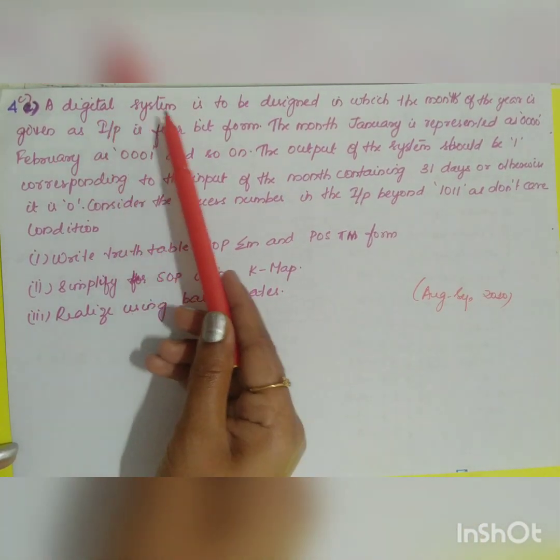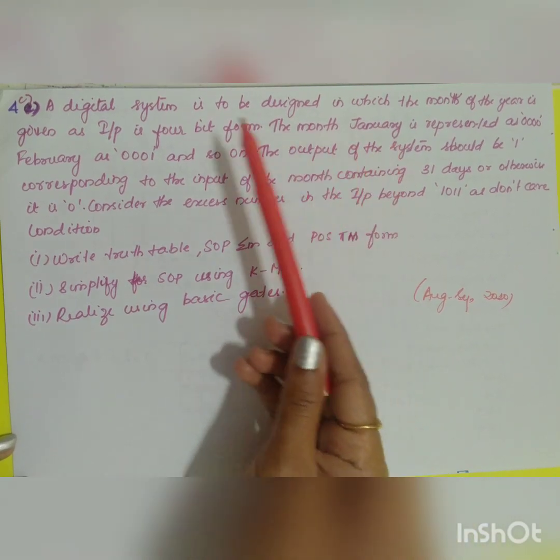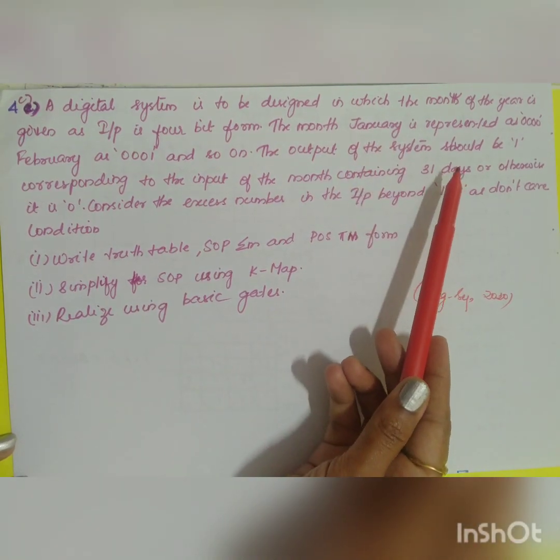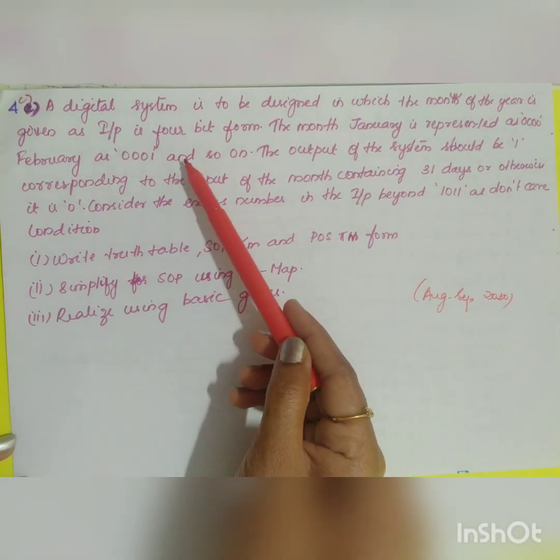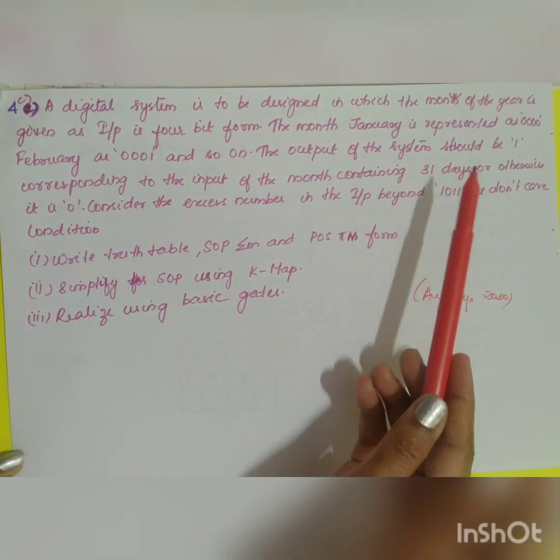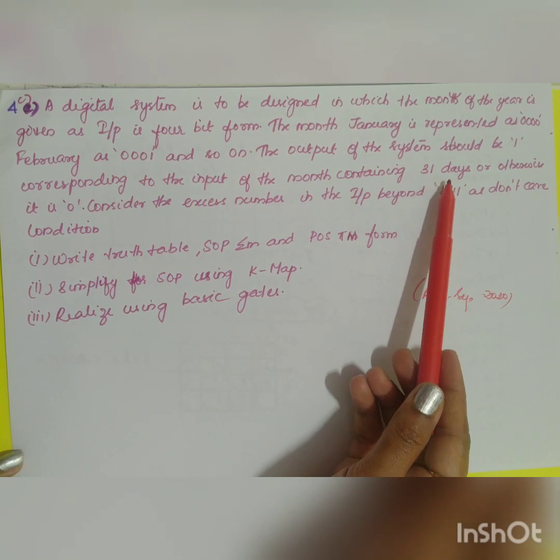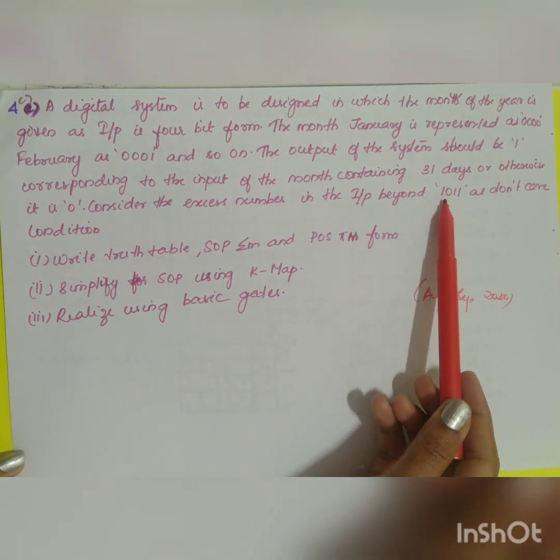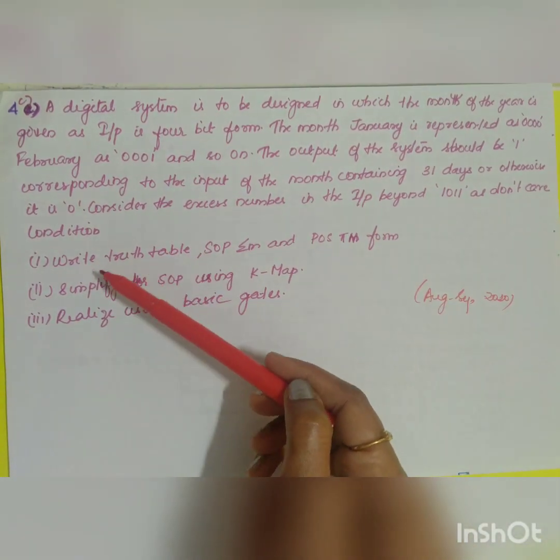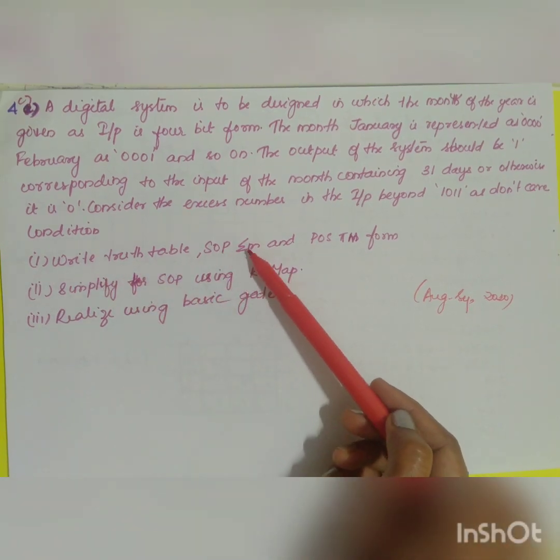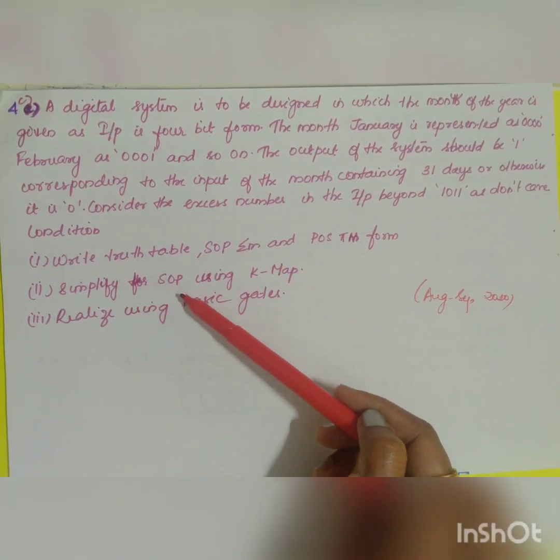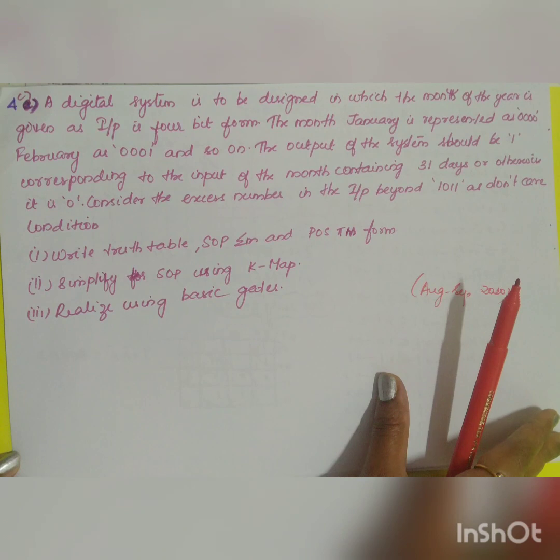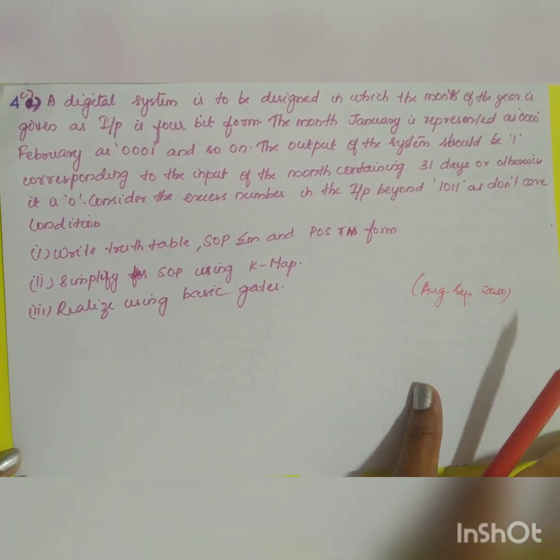The next question is the 4th question, part C. A digital system is to be designed in which the month of the year is given as input in 4-bit form. The month January is represented as 0000, February as 0001 and so on. The output of the system should be 1 corresponding to the input of the month containing 31 days, or otherwise it is 0.